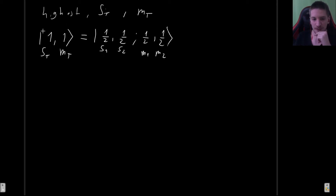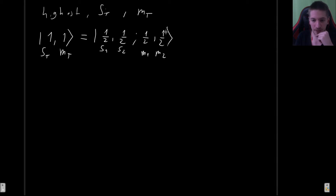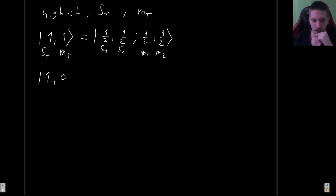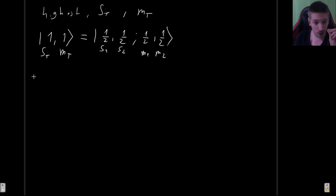Let's take highest s_total and highest m_total: that gives us the state |1, 1⟩, which corresponds to |1/2, 1/2; 1/2, 1/2⟩ since m_total is one and we need both m1 and m2 to be one-half. To go to another state, for example |1, 0⟩, we don't readily know it — we can imagine it's some combination of one-half and minus one-half, but we don't know the coefficients. So we apply the lowering operator to this state.